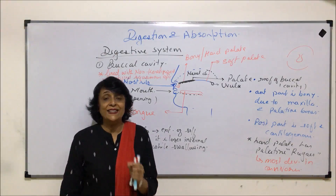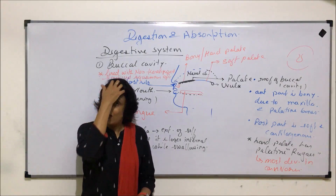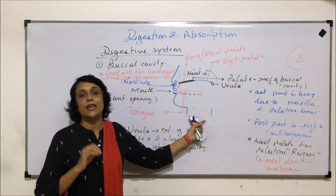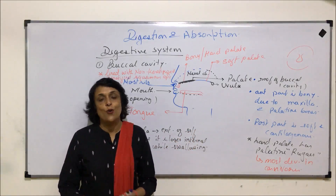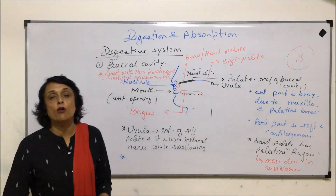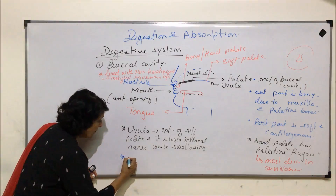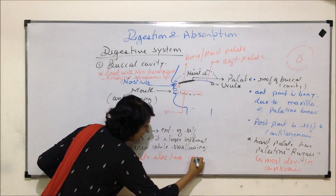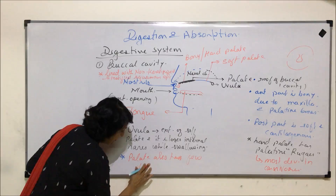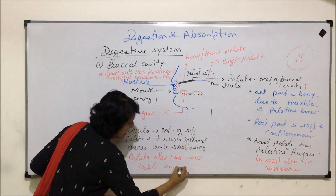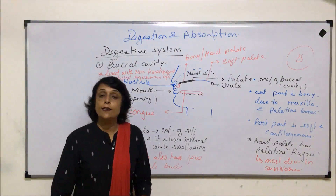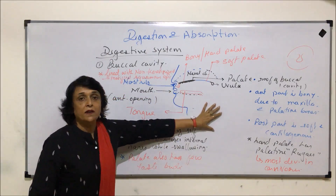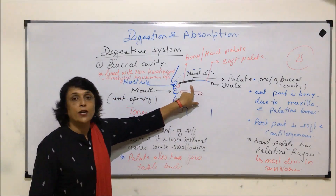Another important thing coming back to the palate: earlier it was believed that the palate has all the taste buds. Later it was found that the maximum taste buds are on the tongue, but there are scattered few taste buds on the palate also. That is why tasty food is also known as palatable — the term 'palatable' for tasty food was given because earlier it was believed that only the palate has the taste buds.